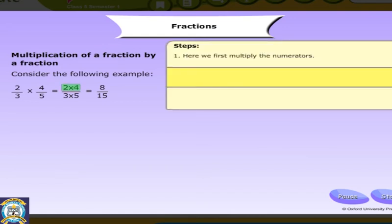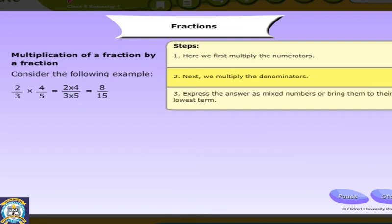Steps. 1. Here we first multiply the numerators. 2. Next we multiply the denominators. 3. Express the answer as mixed numbers or bring them to the lowest term.